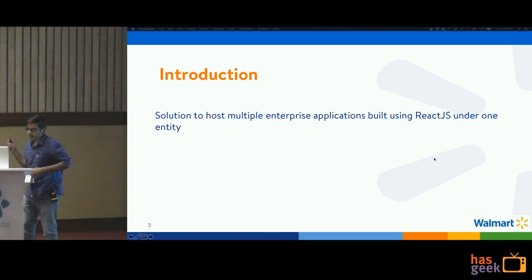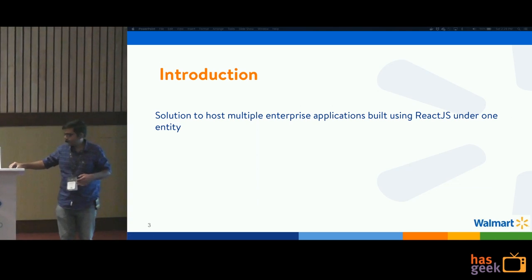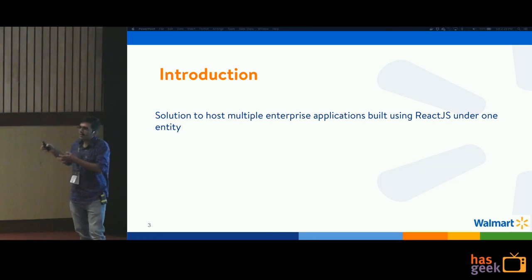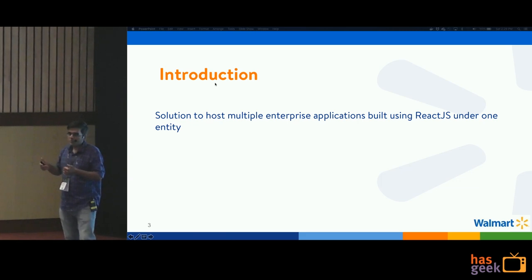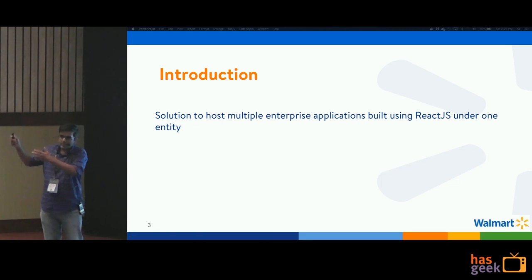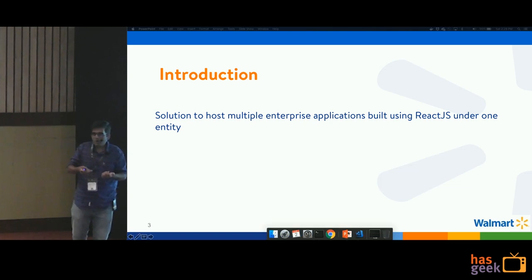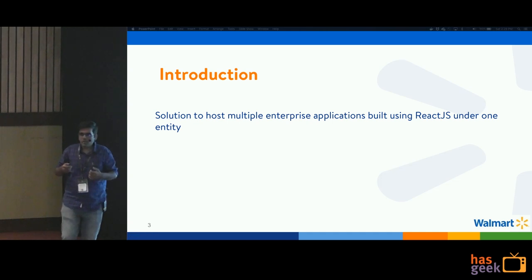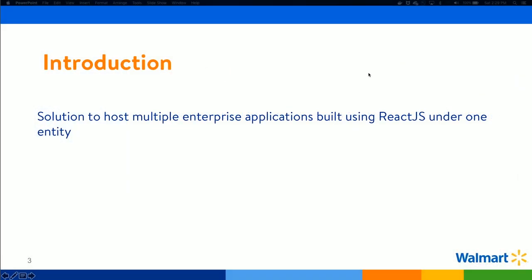So let's get back to the topic. When we talk about delivering applications at scale, there are multiple meanings to how you can scale applications. As a developer, you can write efficient and performant code to scale your application, or from a DevOps perspective, you can increase the number of servers when traffic increases. But what I'm going to talk about today is how to scale applications by having a proper architecture and CI/CD system to support multiple applications.